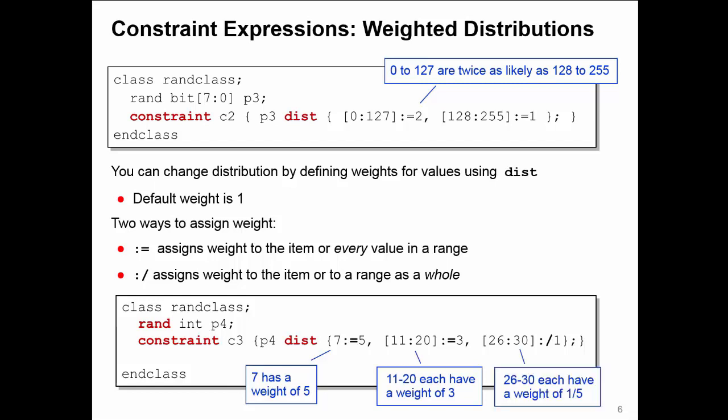But all the values in the range 26 to 30 share an overall weight of 1, which gives them an individual weight of one-fifth. So fractional weights are possible, although it makes the values very unlikely. Negative weights are not possible though.